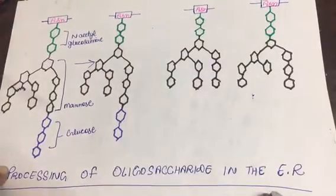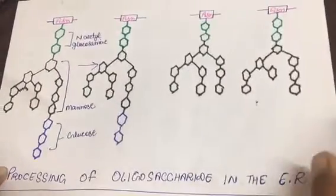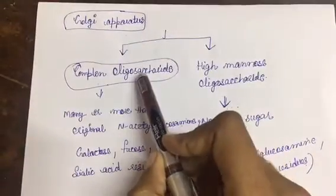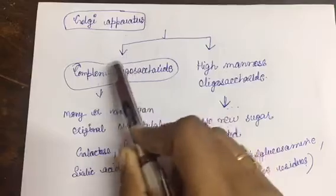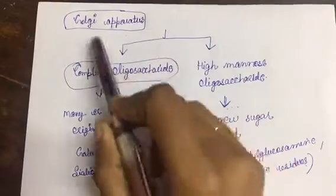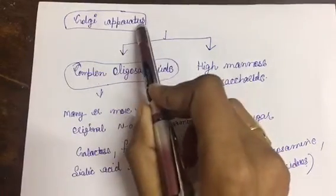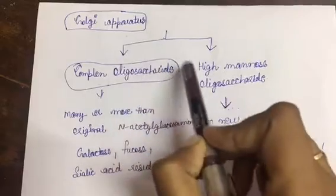So the further modification of that N-linked glycosylated protein will occur in Golgi apparatus.